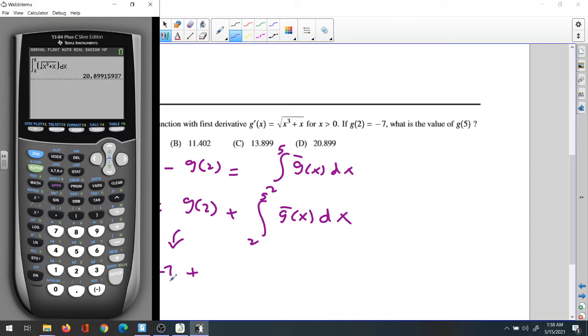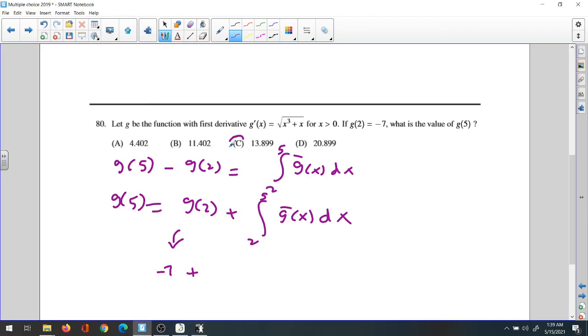Don't forget to subtract 7. This is the initial condition. So minus 7. The answer is 13.899. The answer is C for this question.